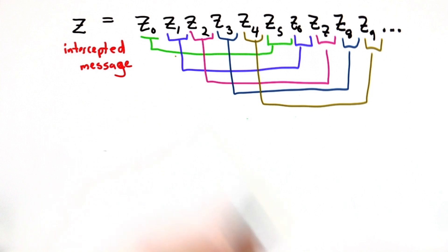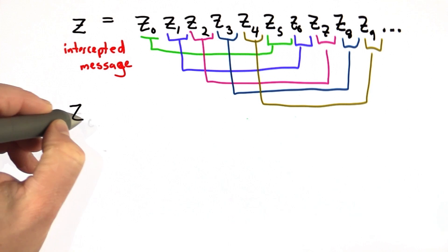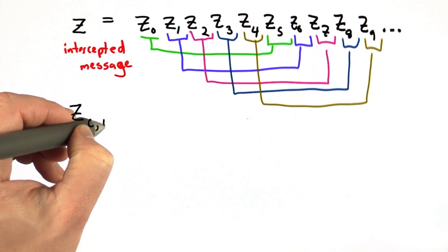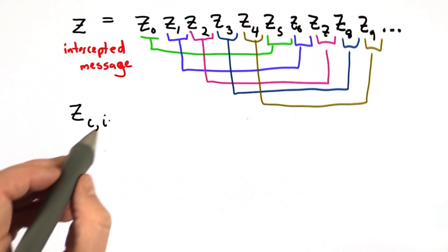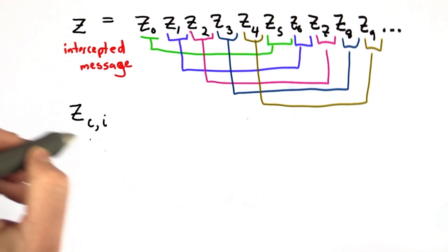We can think of each of these as a separate channel. We're going to use a new notation. We're going to subscript z by channel and the letter for that channel, so z c sub i is the i-th letter for channel c.